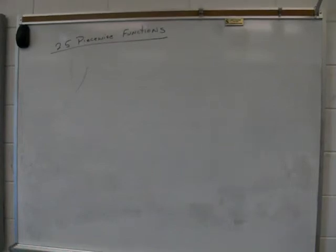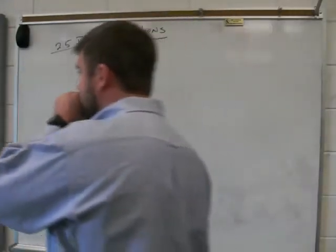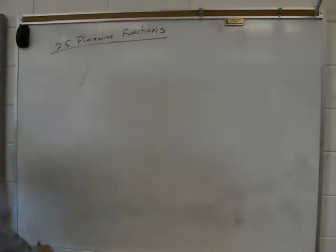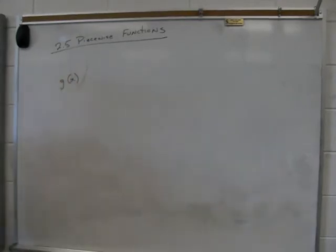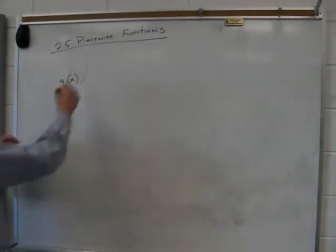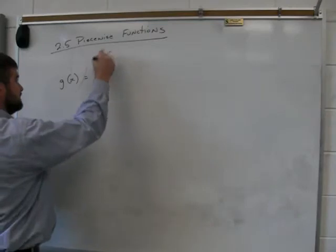All right, now we're still in 2.5 piecewise functions. We're moving on to graphing. I've got it on the smart board, I'm going to work it over here as well. G of x, you know that the letter means nothing. It could be f of x, it could be g of x, it could be h of x. Those are common letters that we use.